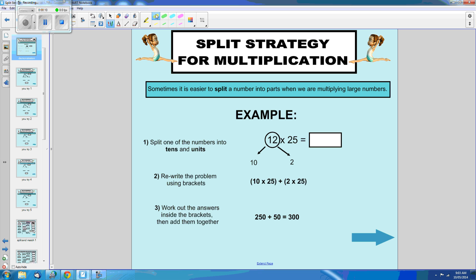12 times 25. Let's split the 12 into tens and units. So now our 12 is 10 and 2. Then all we need to do is rewrite the problem using brackets. So 12 times 25 is the same as saying 10 times 25 plus 2 times 25.